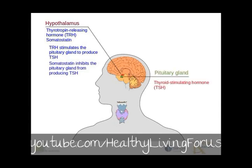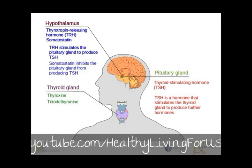Next, let us look at the pituitary gland. TSH, thyroid-stimulating hormone, is a hormone that stimulates the thyroid gland to produce further hormones. Now, to the thyroid: stimulated by TSH, the thyroid produces thyroxine, T4, and triiodothyronine, T3, which affects the metabolism of almost every tissue in the body.